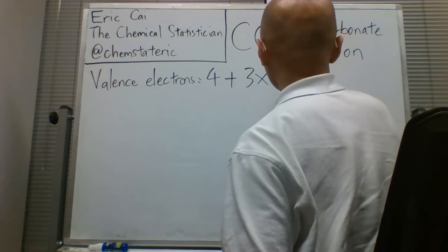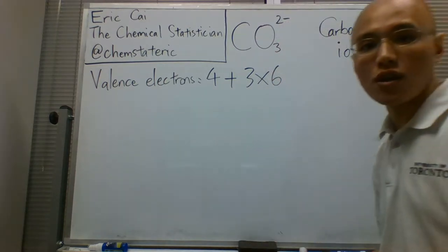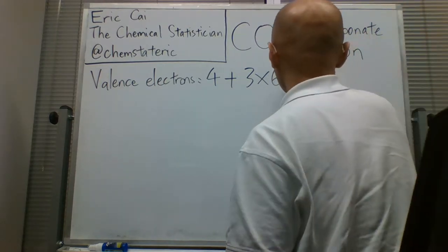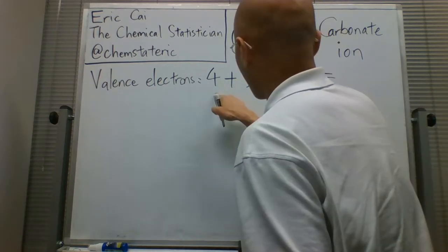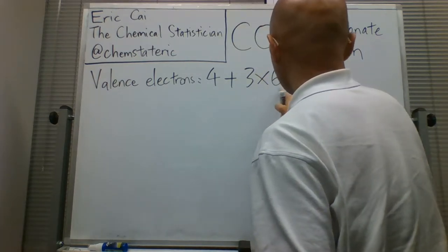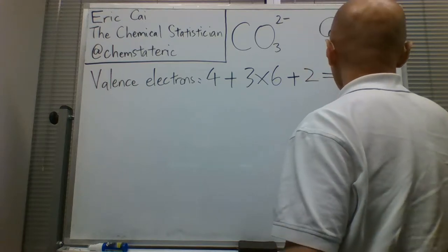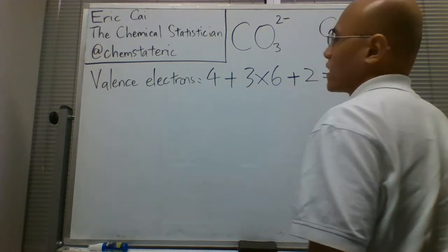There are also the two electrons from the charge of 2-. That gives us 4 plus 18 plus 2 equaling 24 valence electrons.